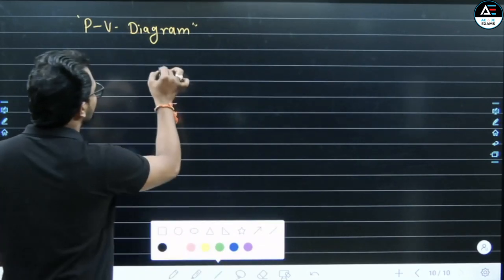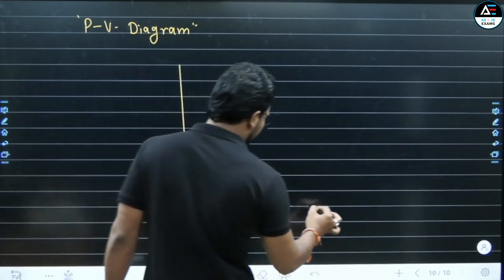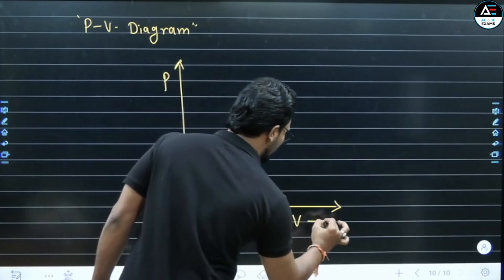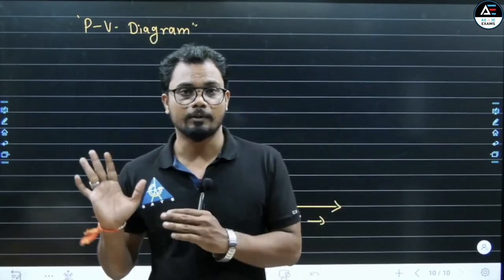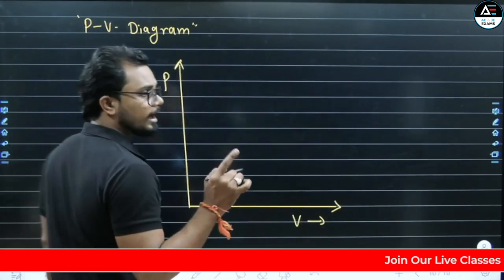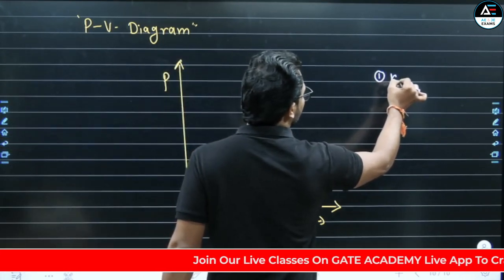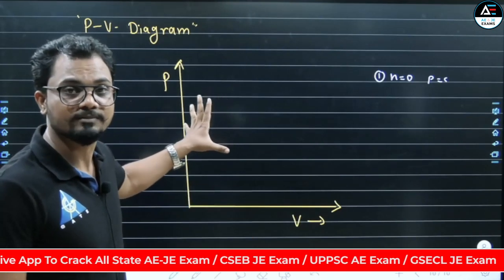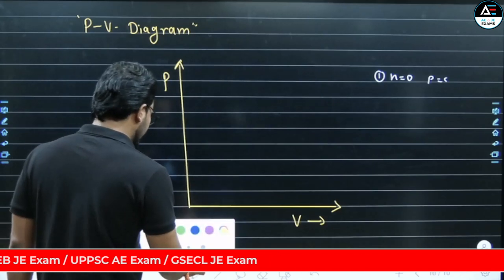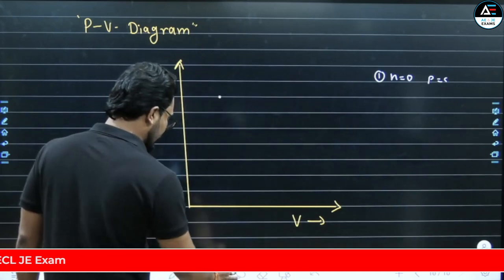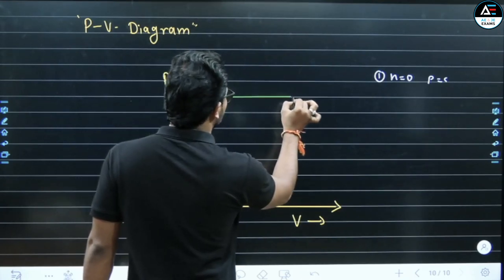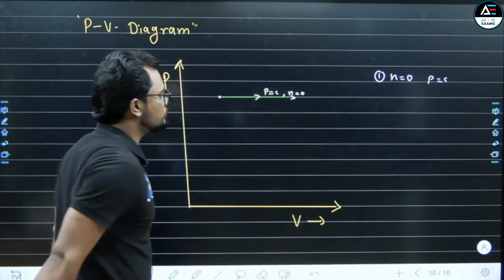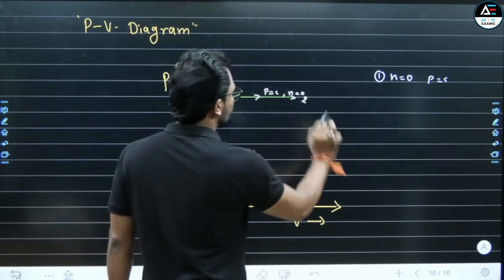In the PV diagram, the vertical axis represents pressure and the horizontal axis represents volume — pressure and volume. All processes will be drawn here. Point number 1: N = 0, which gives P = constant, meaning constant pressure process. In the PV diagram, a constant pressure process gives a horizontal line. So from this starting point, we get a horizontal line — this is the isobaric process, P = C, N = 0, from point 1 to 2.